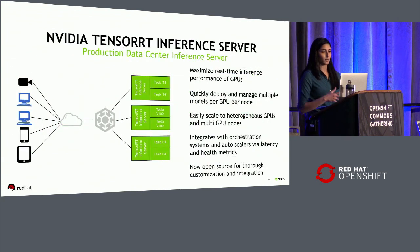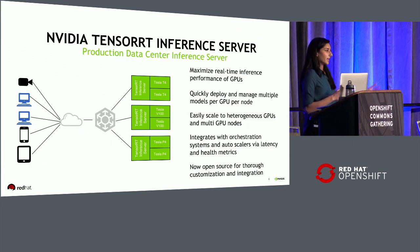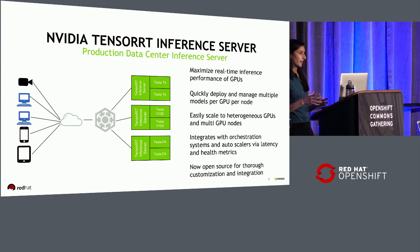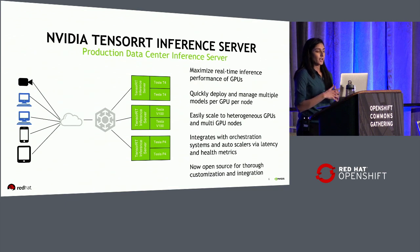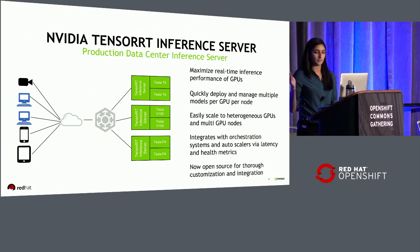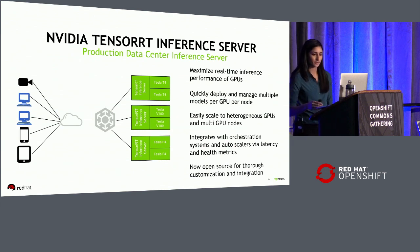The NVIDIA TensorRT inference server was announced in September and is also now open sourced as of about three weeks ago. This is a high-level overview of where it fits into the larger ecosystem. On the left, clients send requests to a cloud application running in the data center. From there, requests are sent to a load balancer, which directs traffic to the appropriate instance of the TensorRT inference server. In this case there are three instances running, and all the underlying hardware is visible to the inference server, including heterogeneous GPUs — T4, V100, and P4. It integrates with orchestration systems such as Kubernetes and is open source and available on GitHub.